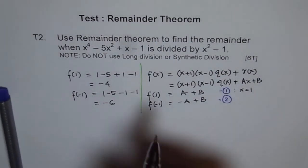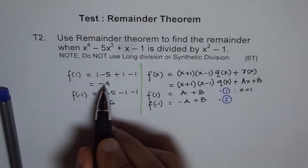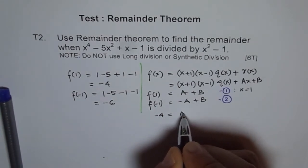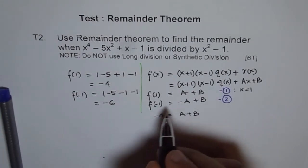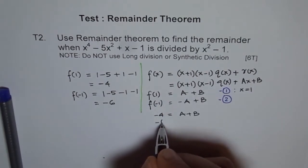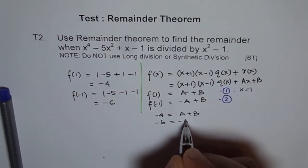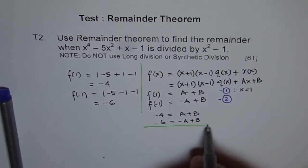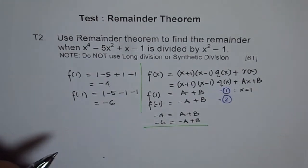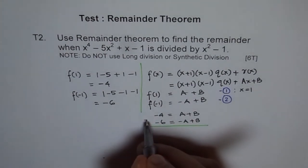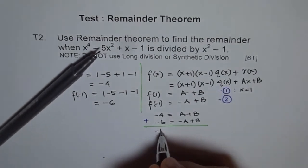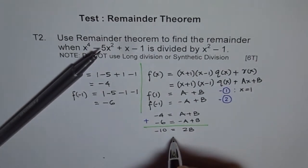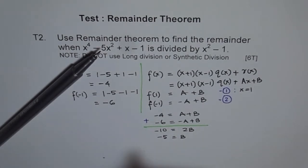Let's do it. So I'm rewriting these equations. f of 1 is minus 4, so I'm writing minus 4 equals a plus b. And f of minus 1 is minus 6, so I'm writing minus 6 equals minus a plus b. I will add them. So if I add them, then I get minus 10 equals 2b. Or I can say b equals minus 5.